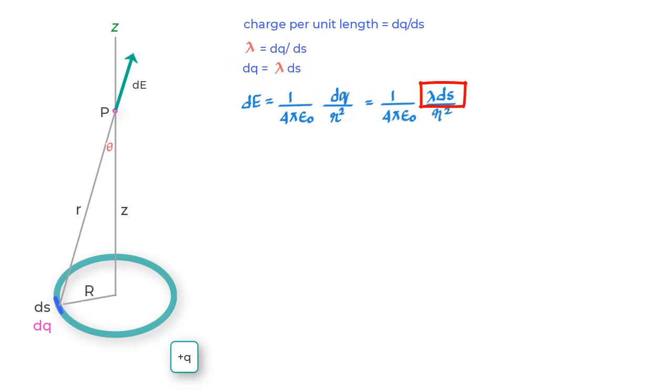But then this being a right angle triangle, R square should equal Z square plus R square. So we can substitute the value of R square in the equation to get DE equals 1 upon 4πε₀ lambda DS upon Z square plus capital R square.